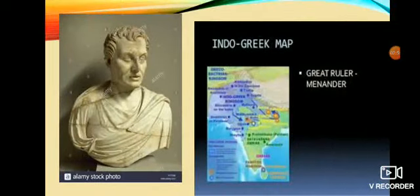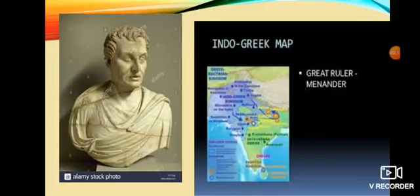The most famous Indo-Greek ruler was Menander, also known as Milinda, who converted to Buddhism under the influence of the Buddhist monk Nagasena. A book called Milinda Panha contains a dialogue between Menander and Nagasena. The Indo-Greeks issued coins having inscriptions in both Greek and Kharoshti script. Menander was the most powerful Indo-Greek ruler, ruling over a vast area from Afghanistan to Mathura, from 155 BCE to 130 BCE.